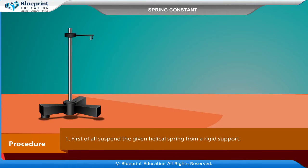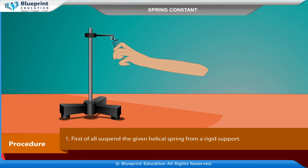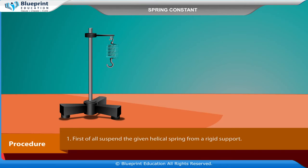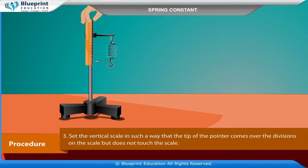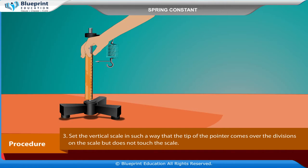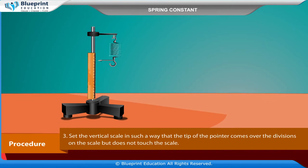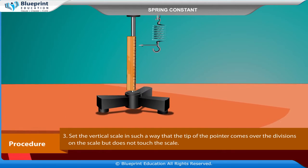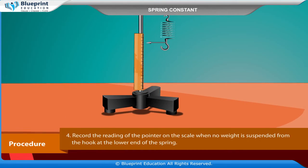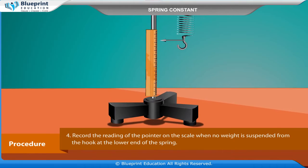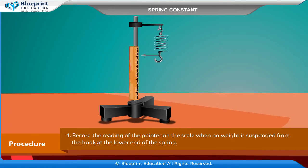Procedure: First of all, suspend the given helical spring from a rigid support. Attach a pointer and a hook at its lower end. Set the vertical scale so that the tip of the pointer comes over the divisions on the scale but does not touch the scale. Record the reading of the pointer on the scale when no weight is suspended from the hook at the lower end of the spring.